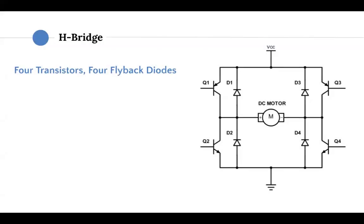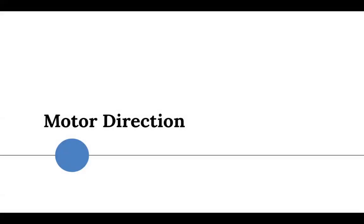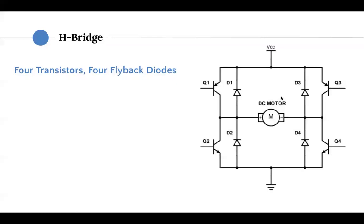So now for motor direction. Take that previous diagram that we had here, multiply it by four, or duplicate it four times, and we get this. So what is an H-bridge and why do we want it? An H-bridge allows us to control the motor direction, meaning clockwise or counterclockwise. Not speed yet, but direction.